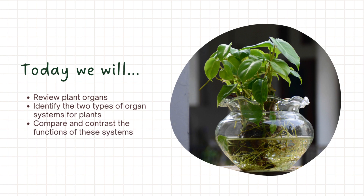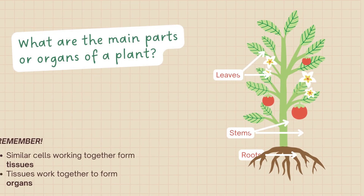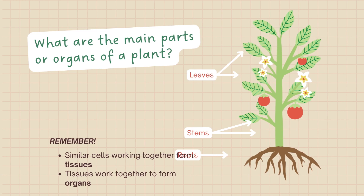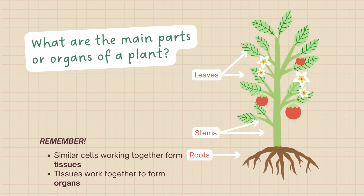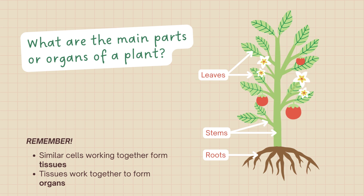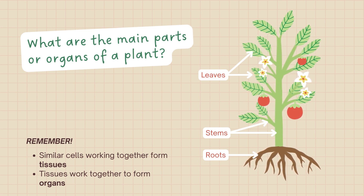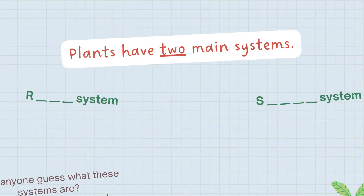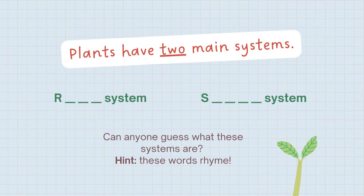Let's start. What are the main parts or organs of the plant? Everybody knows: leaves, stems, and roots are the main parts of a plant. Plants have two main systems — can anyone guess what these systems are?